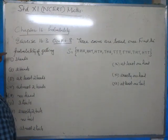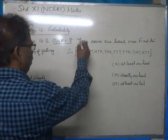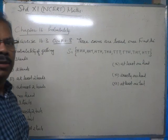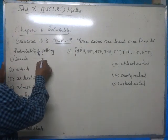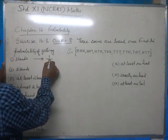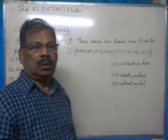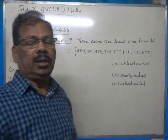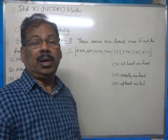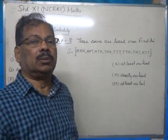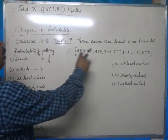The first part asks for the probability of getting three heads. There is only one favorable outcome. The probability of an event is the number of favorable outcomes divided by the total number of outcomes in the sample space. That is one divided by eight.